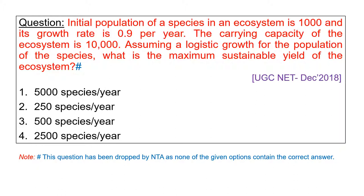Initial population of a species in an ecosystem is 1000 and its growth rate is 0.9 per year. The carrying capacity of the ecosystem is 10,000. Assuming a logistic growth for the population of the species, what is the maximum sustainable yield of the ecosystem?